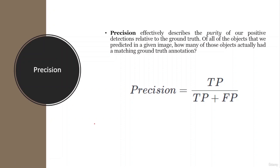Precision can also be used to measure the performance of the model. It is calculated by taking the number of true positive pixels — the number of pixels correctly labeled as belonging to a specific class — divided by the total number of positive pixels predicted by the model, meaning the number of pixels the model thinks belong to that class. If a model has high precision, it means most of the pixels it predicts belong to a specific class. The formula is: precision equals true positive divided by true positive plus false positive.